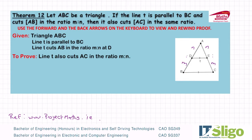Next up we have Theorem 12, and again I'm using the Project Maths website just like I did with Theorem 11. Theorem 12 states: let ABC be a triangle; if the line T is parallel to BC and it cuts AB in the ratio M is to N, then it also cuts AC in the same ratio.